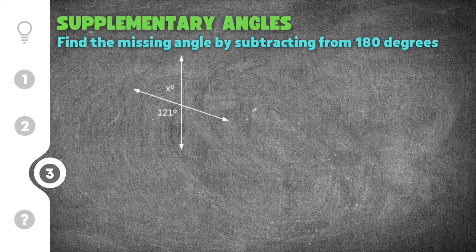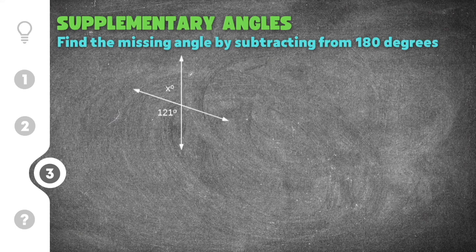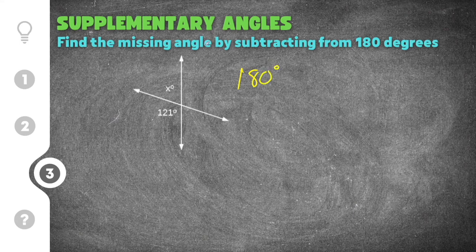Jumping down to our final practice problem on supplementary angles. This one gives us 121 degrees that we know and then another angle that we don't know. We know they form a straight line and a straight line adds up to 180 degrees. So we know the two angles together have to be 180.